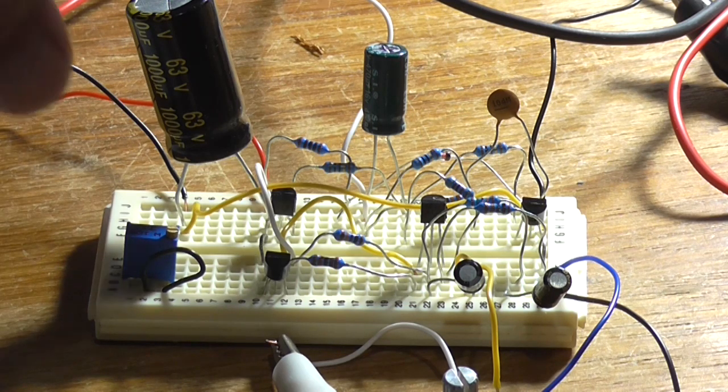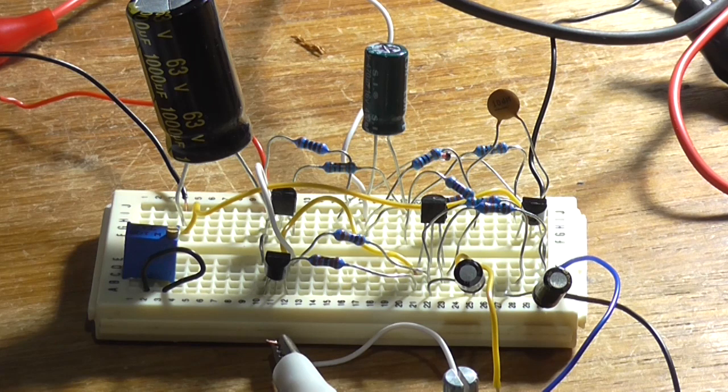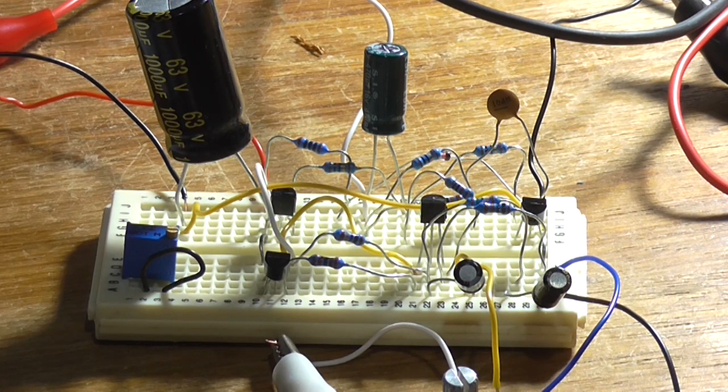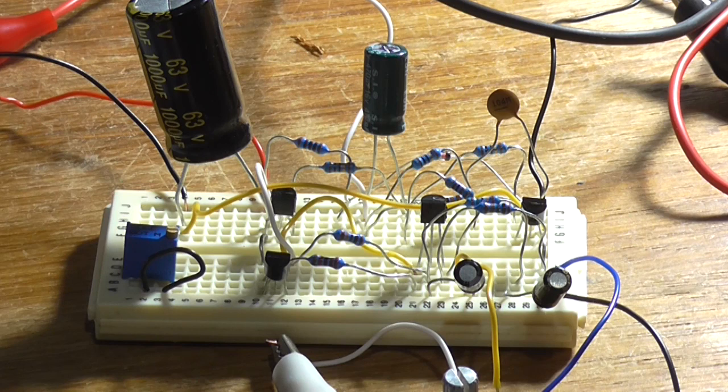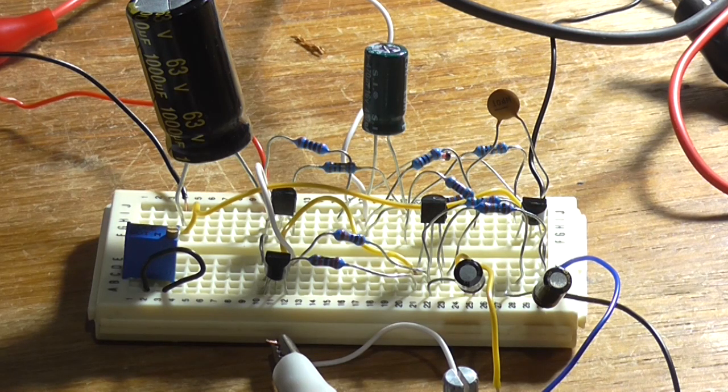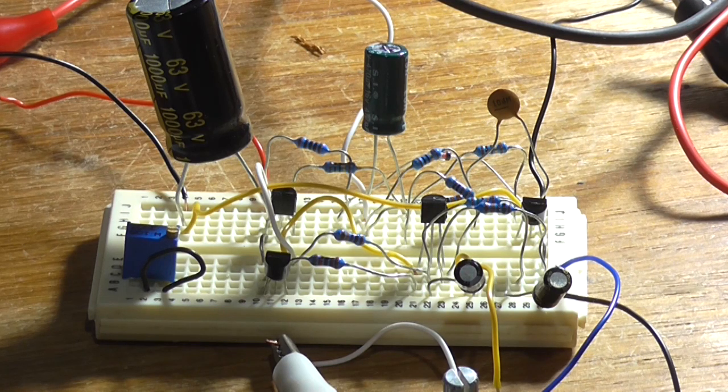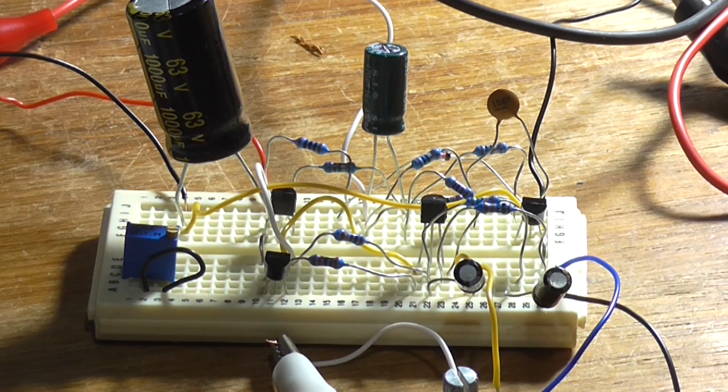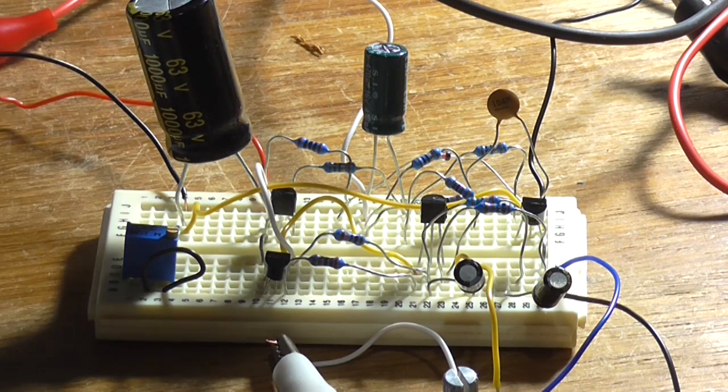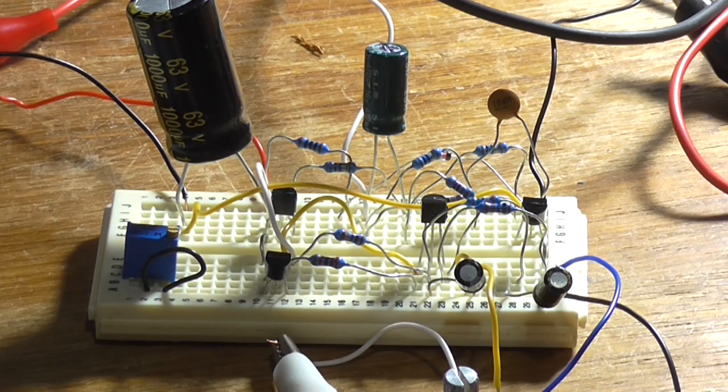Anyway, without further ado, I'm going to build this up and begin testing. See you in a bit. Okay, I got the thing built up on breadboard, as messy as that is. However, I don't have one ohm resistors for those emitter degeneration resistors there on the output stage, so I'm using 10. You will have a little bit of reduction in voltage output, but I'm going to have to go out and get some one ohm resistors.